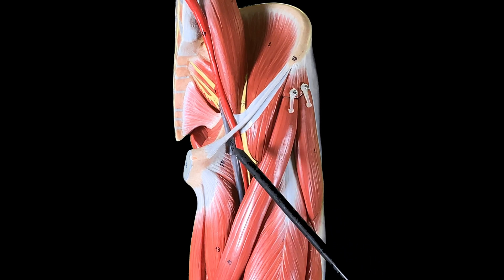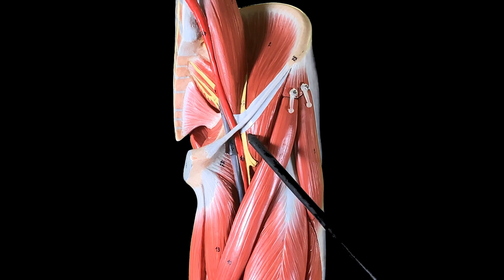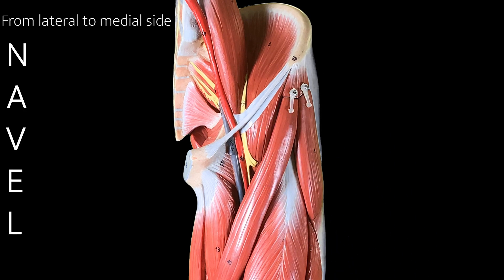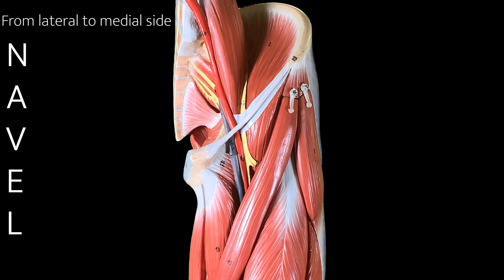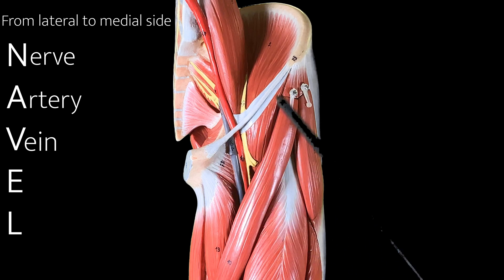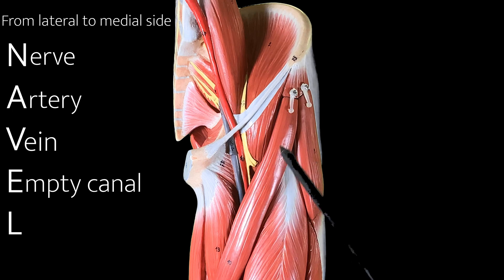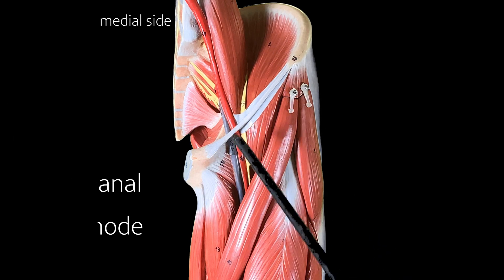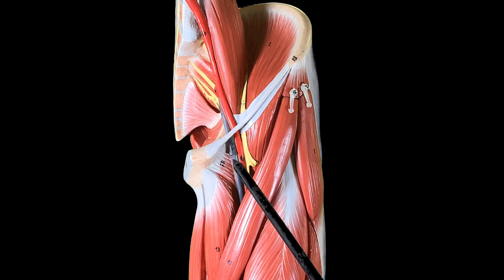An easy mnemonic to memorize the contents organized within this triangle is NAVEL: N stands for nerve (femoral nerve), A for artery, V for vein, E for empty canal, and L for the lymph node that lodges within that canal — the lymph node of Cloquet.